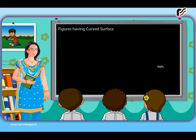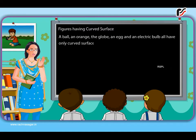Figures having curved surface. A ball, an orange, the globe, an egg and an electric bulb all have only curved surfaces.